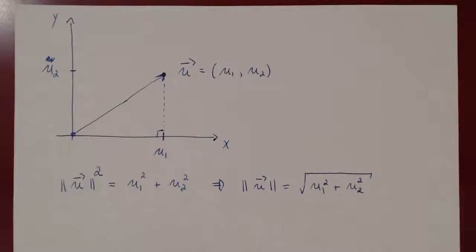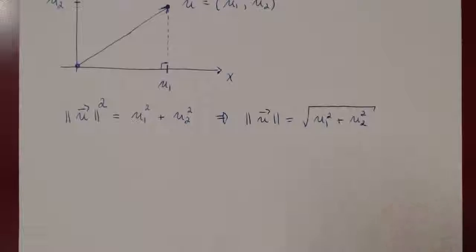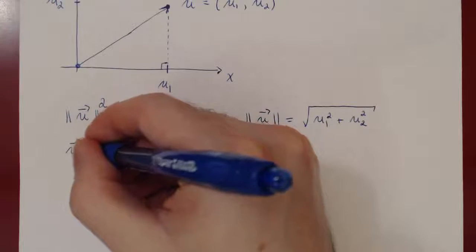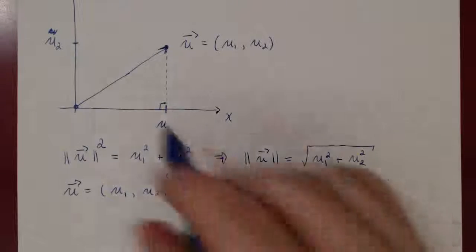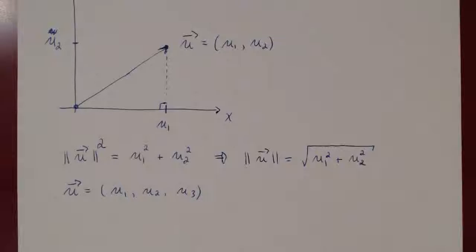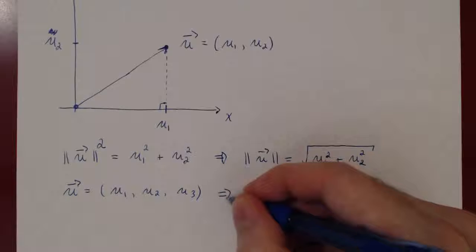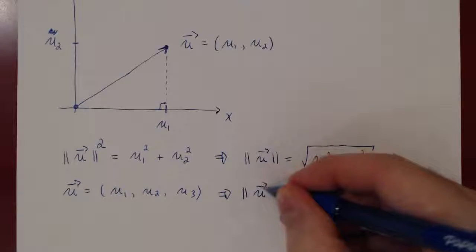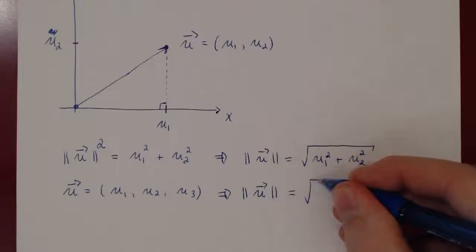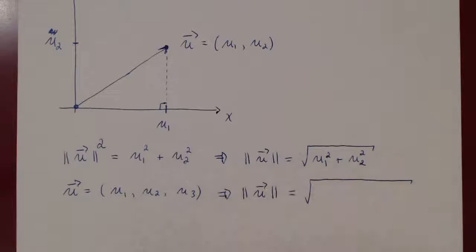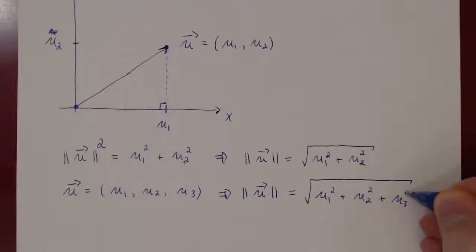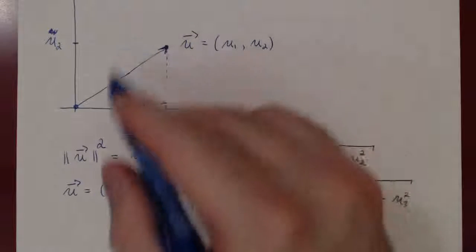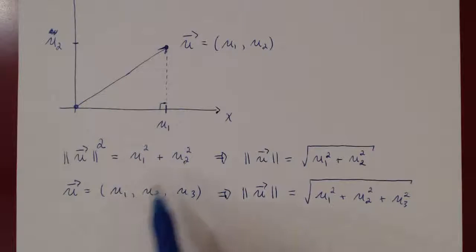You may ask: what about vectors in R3 with three components? So what if vector u was in R3 and had three components u1, u2, u3? I'll let you figure it out — you use a similar picture and you'll realize you have to apply Pythagoras' theorem twice. And if you do so, you get the exact same result: the length of an algebraic vector is simply the square root of the sum of the components squared, so u1 squared plus u2 squared plus u3 squared.